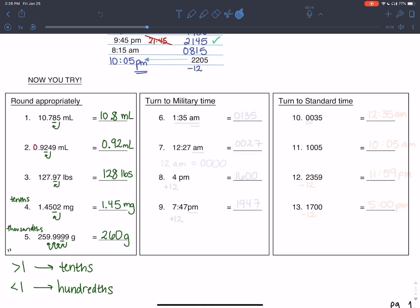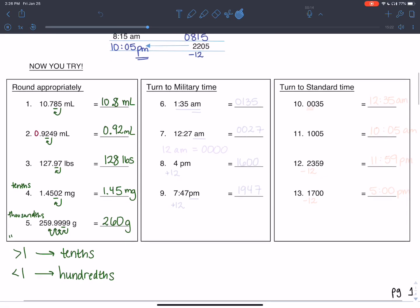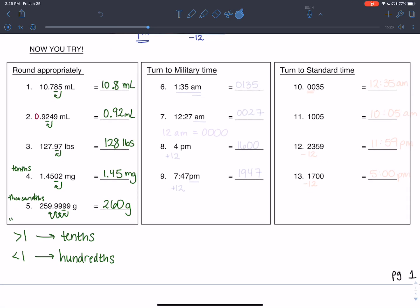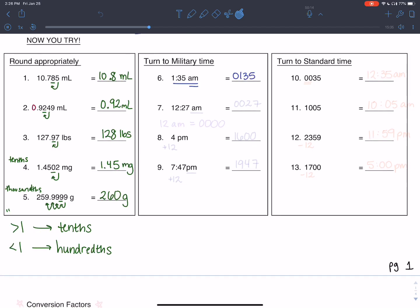So now military time. So turn this 1:35 AM into military time. It is AM early in the morning, so we don't add anything. We just put a zero in front cause we need four numbers. One, three, five. So that would be the time in military time.